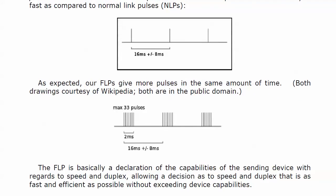An FLP is basically a declaration of the capabilities of the sending device. It announces to the other end the highest speed it can support and the best duplex setting it can support, allowing both ends to make an intelligent decision. This prevents overwhelming the other device — for example, a fast ethernet port wouldn't overwhelm a port only capable of standard ethernet speed.